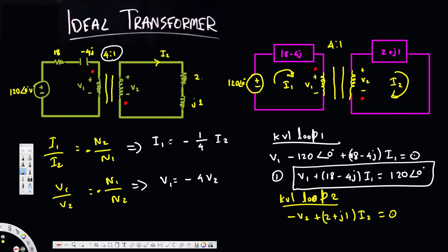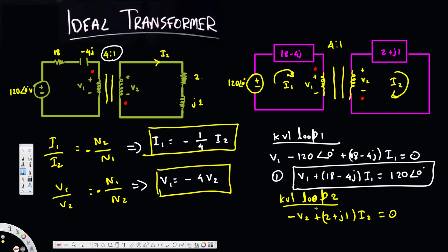We know that I1 equals negative one-quarter I2 and V1 equals negative 4 V2. We can rearrange to get I2 equals negative 4 I1. The strategy is to substitute V1 equals negative 4 V2 into equation one, and substitute I2 equals negative 4 I1 into equation two, bringing everything in terms of I1.